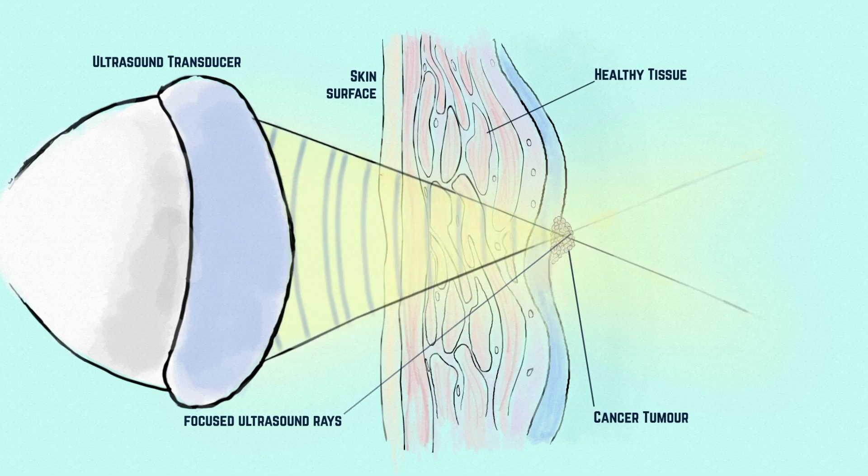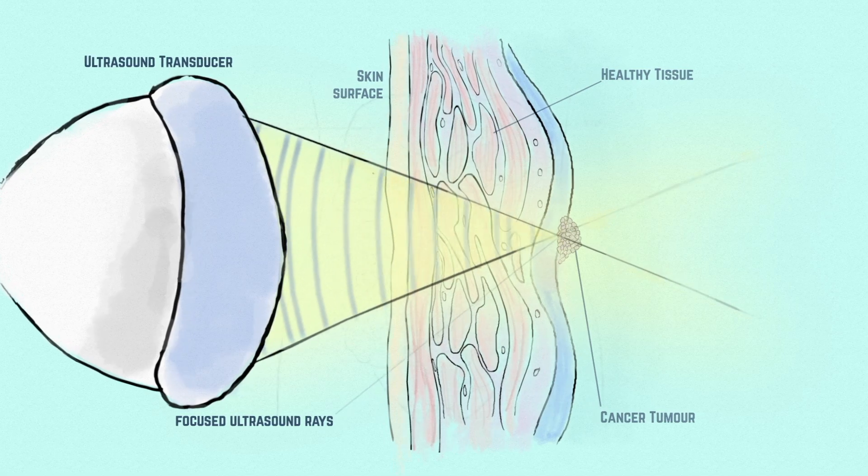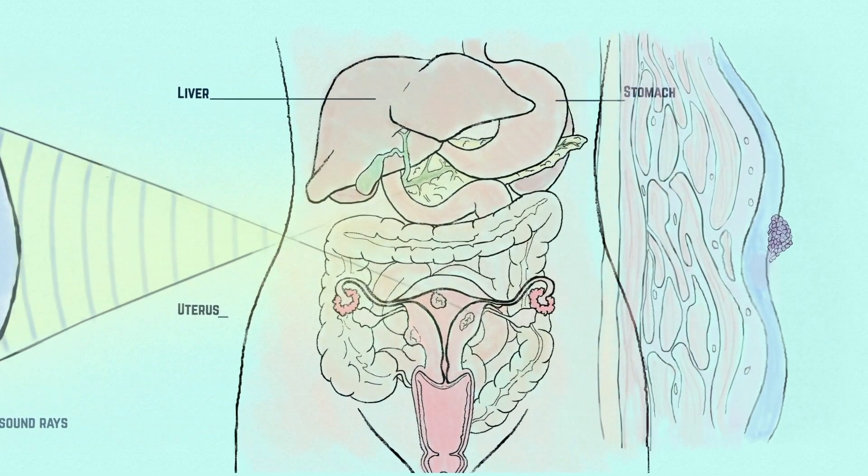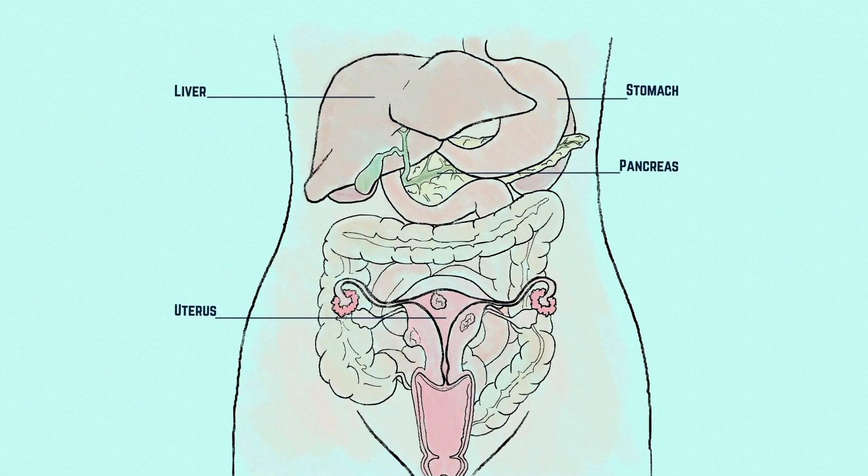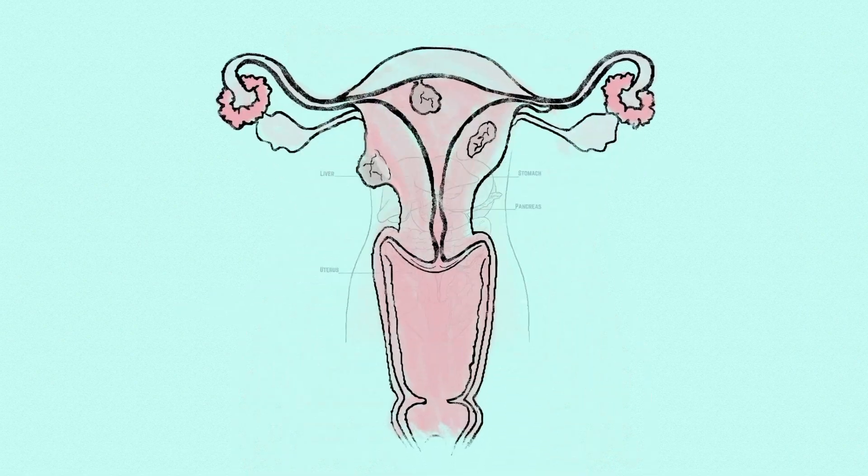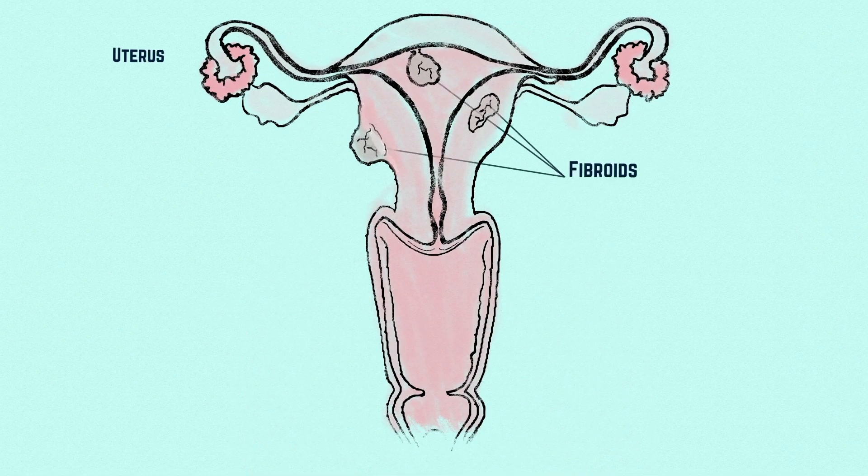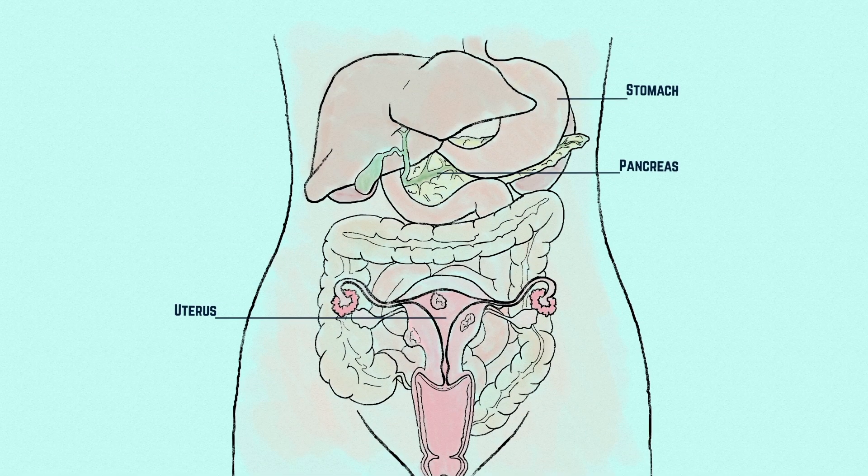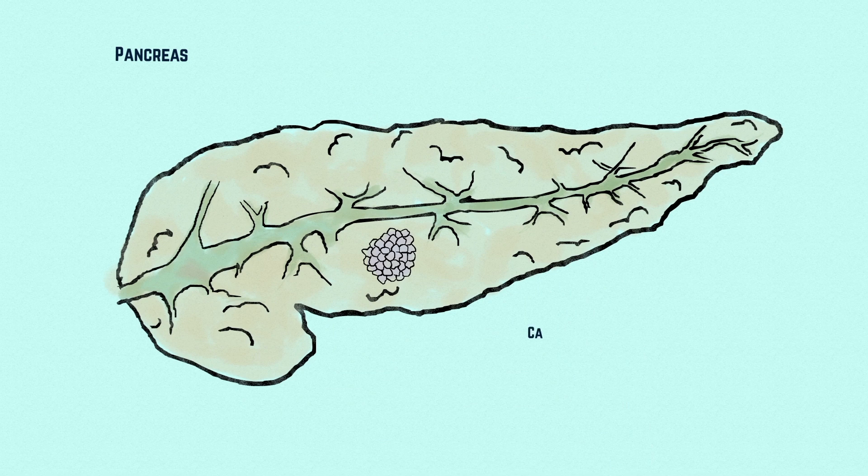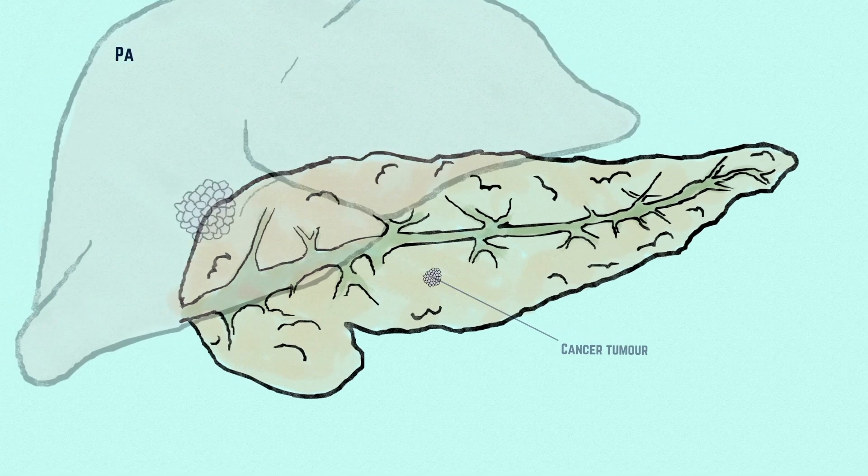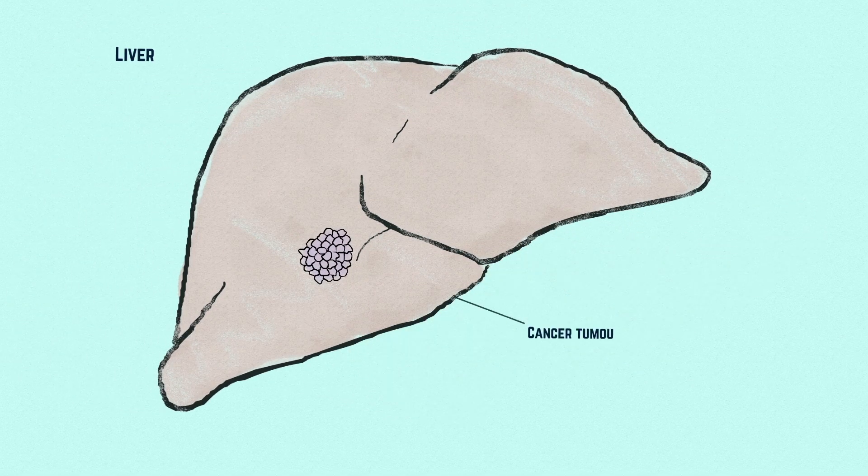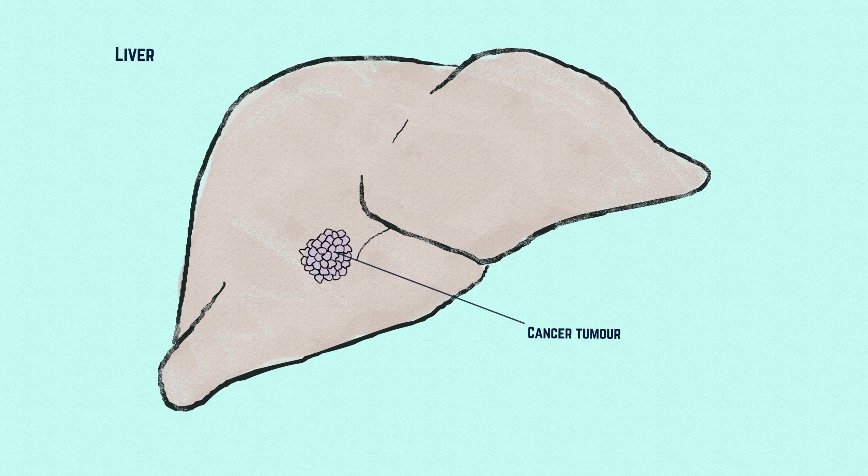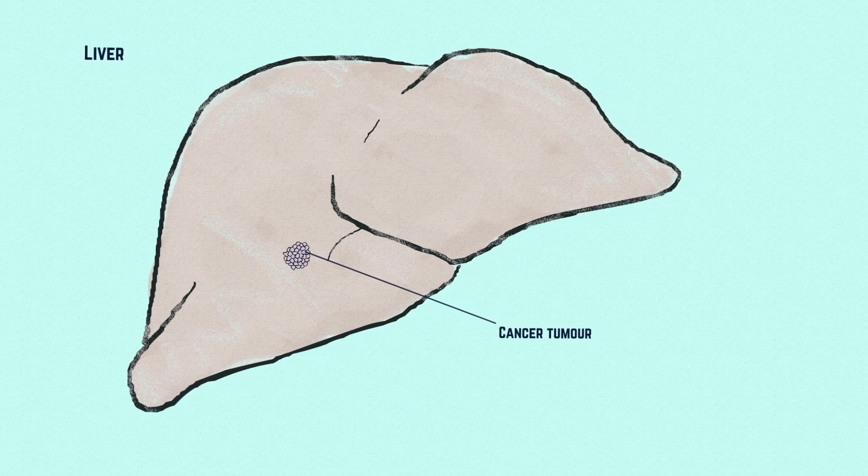We can use this focused ultrasound energy in a number of ways for a number of different conditions. For example, we can target benign tumors such as those of the uterus, uterine fibroids. We can target cancer deep within the body. There's a lot of work now going on looking to see whether we can treat pancreatic cancer, for example, with high intensity focused ultrasound or secondary tumors in the liver as well. This is a new technique and we're still discovering and exploring its potential applications. And a very wide range of new treatments are also being developed.